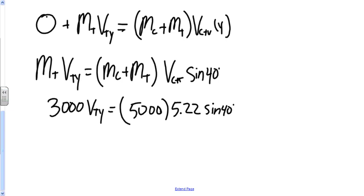Going through the calculations on the right-hand side, you get 16,776.75, though the decimals carry on. And that equals 3,000 times the velocity of the truck in the y direction.